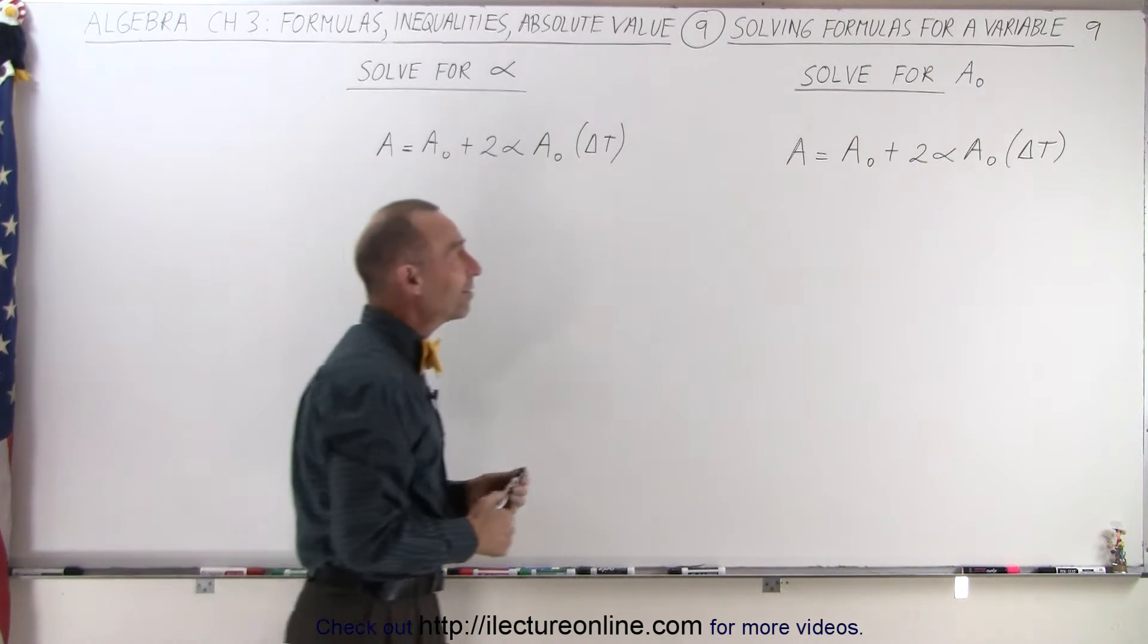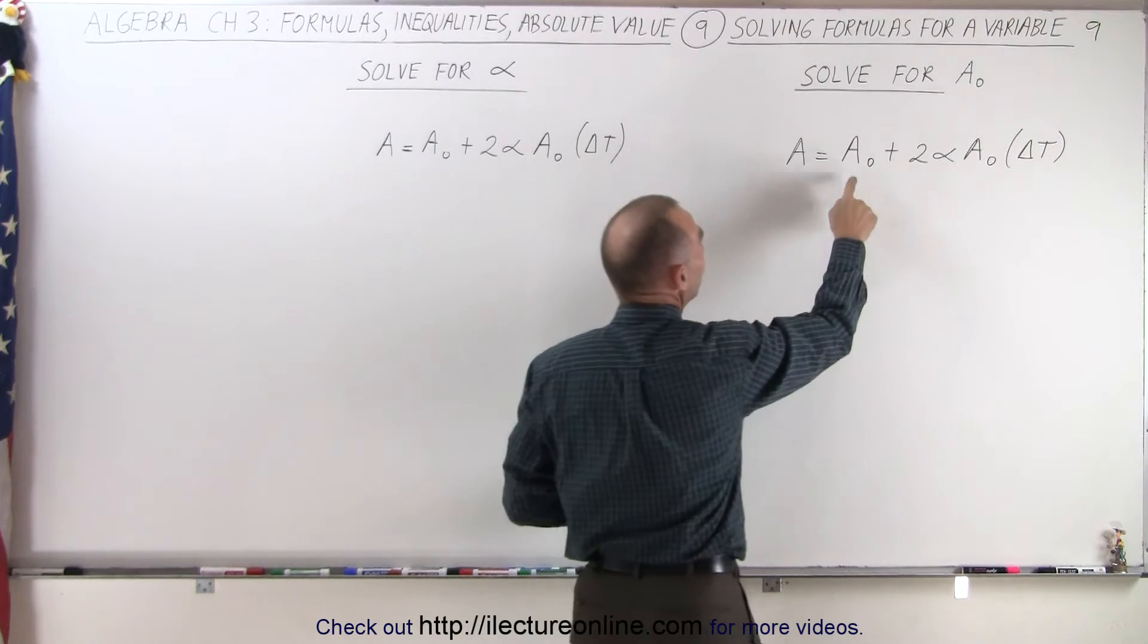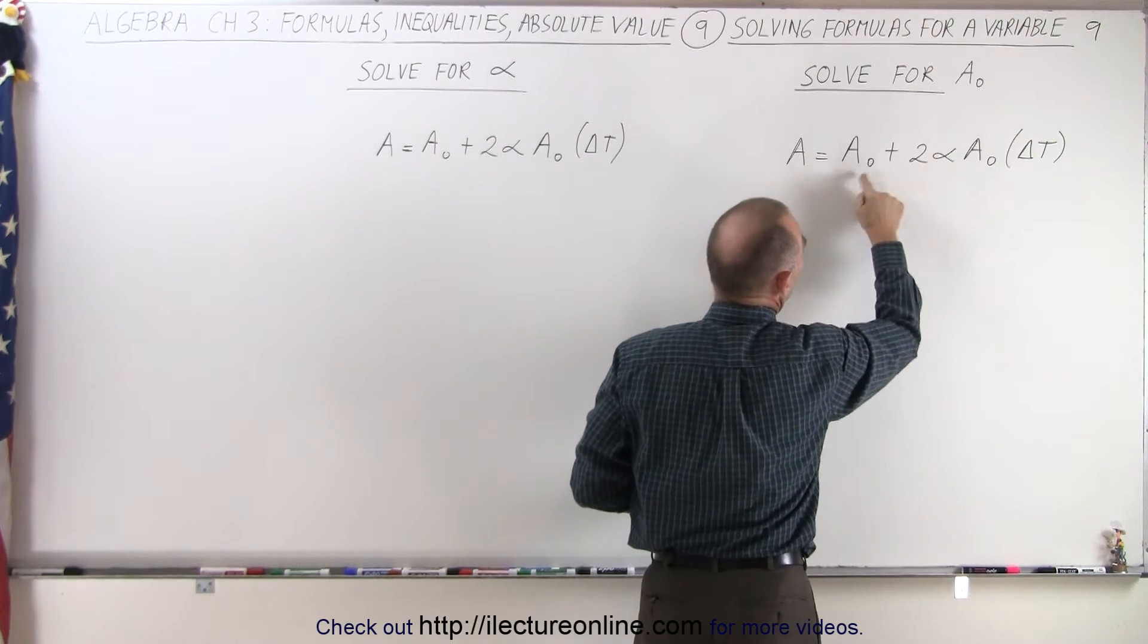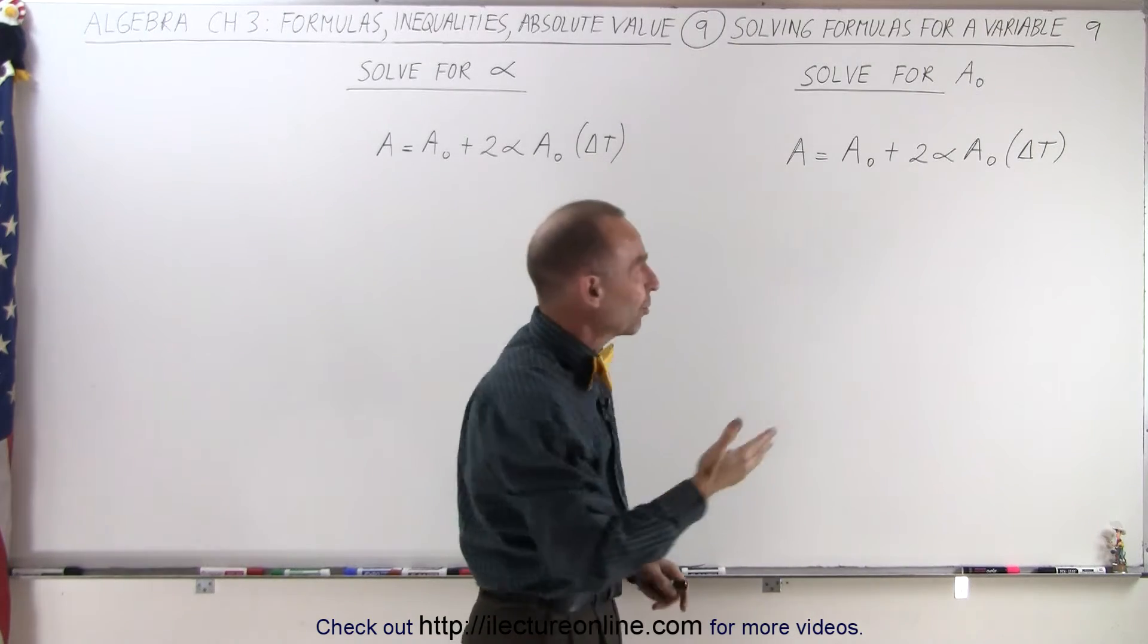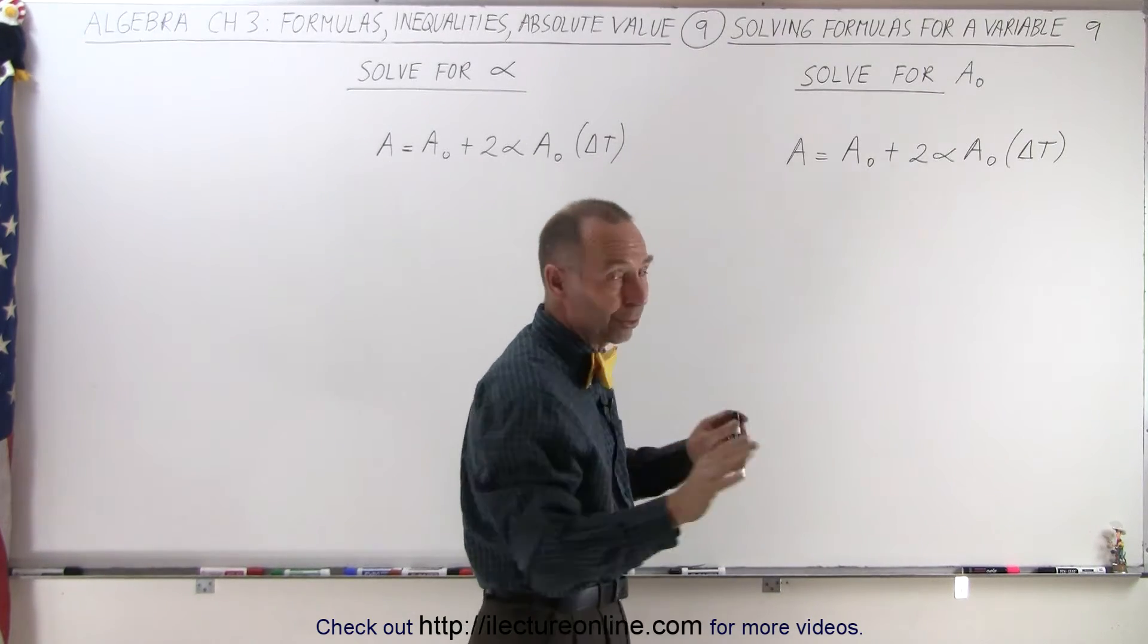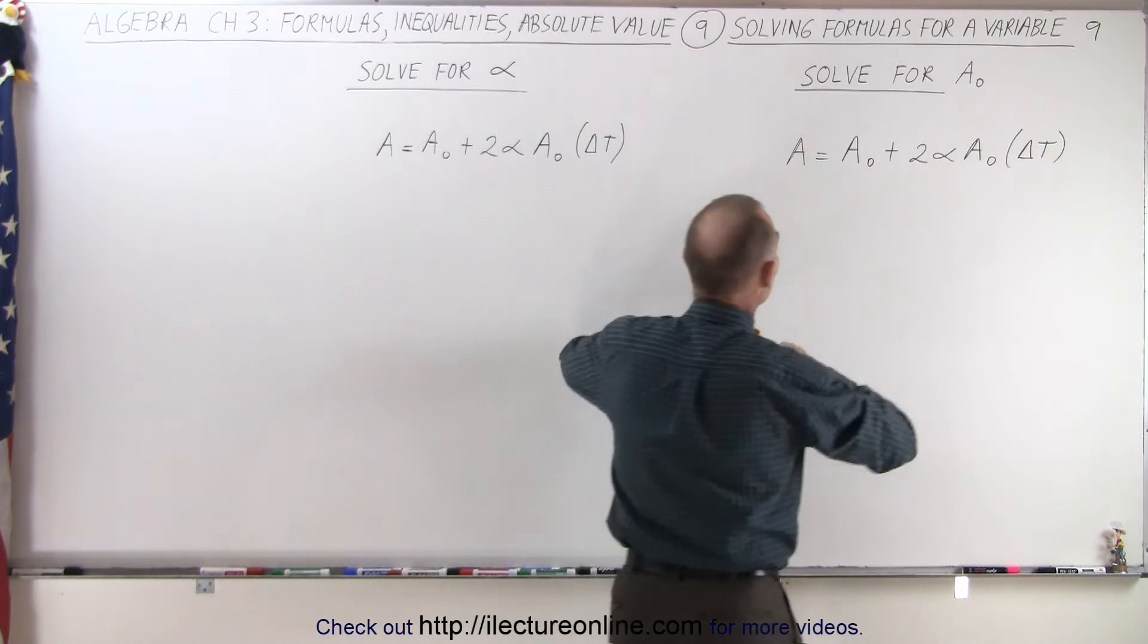So, on the right side, since we're solving for A sub nought, and both of the terms have an A sub nought on the right side, we're simply going to flip the equation around to get it onto the left side, so we don't need to change any signs.